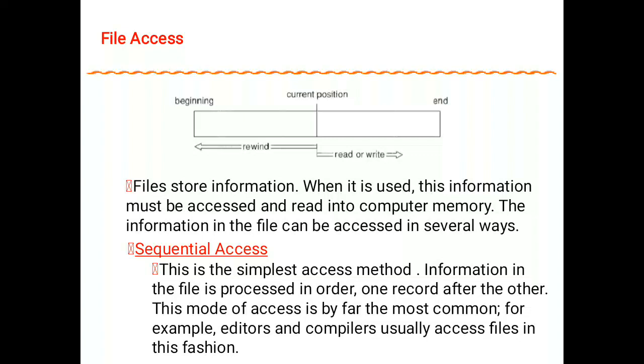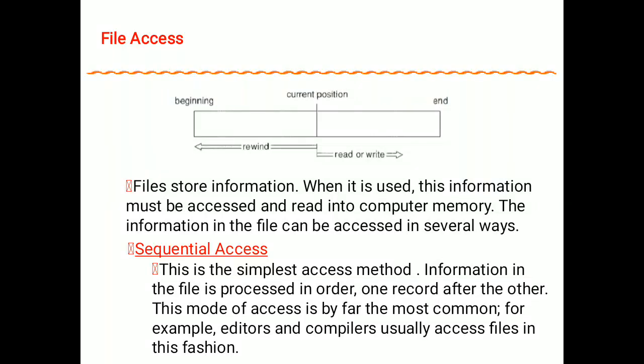Hello, today we will see the topic file access — how many ways we can access files in the operating system. A file is nothing but a place where we can store information, and when that information is stored it can be accessed from the computer memory. There are different ways how we can access that information from computer memory.